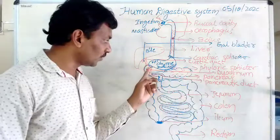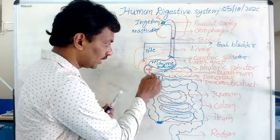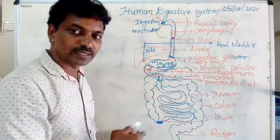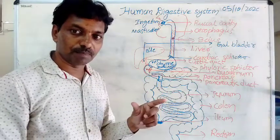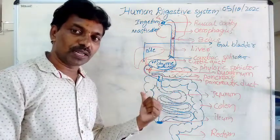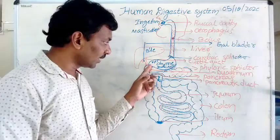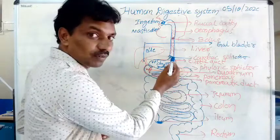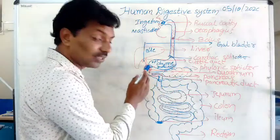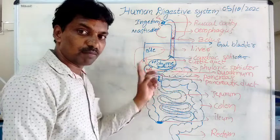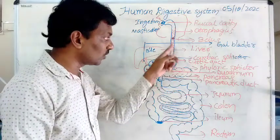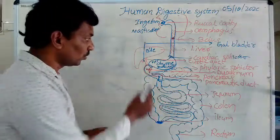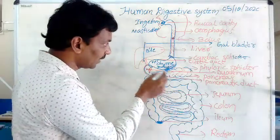The chyme enters into the duodenum — the U-shaped first part of the small intestine. The cardiac sphincter allows the bolus into the stomach; the pyloric sphincter allows the chyme into the duodenum.